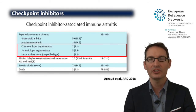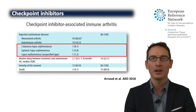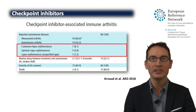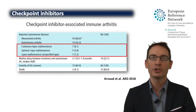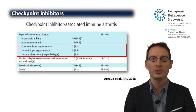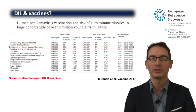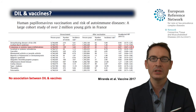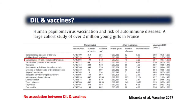Just a word about two common cases: checkpoint inhibitors, which are quite a hot topic in 2019. I had the opportunity to review a series of 86 cases of arthritis due to checkpoint inhibitors, and a small proportion of these cases are actually systemic lupus or cutaneous lupus induced by checkpoint inhibitors. Regarding vaccines, the French health ministry led a study following up young women vaccinated against HPV, and recorded no significant association with the induction of systemic lupus.